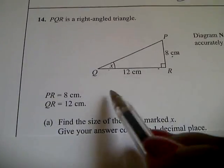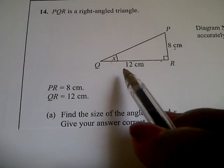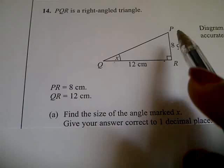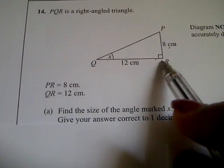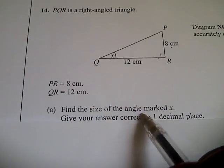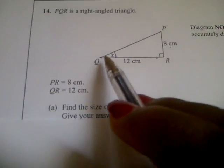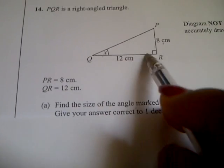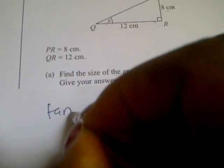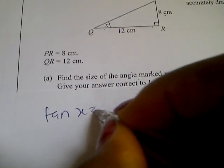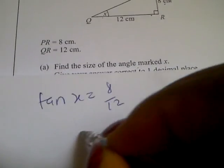Question 14: PQR is a right angle triangle, PR is 8 and QR is 12. Find the size of angle x. Knowing that opposite over adjacent is tan, you have that tan x is equal to 8 over 12.